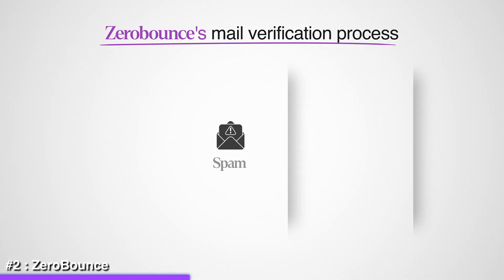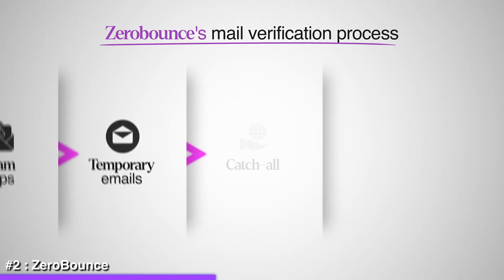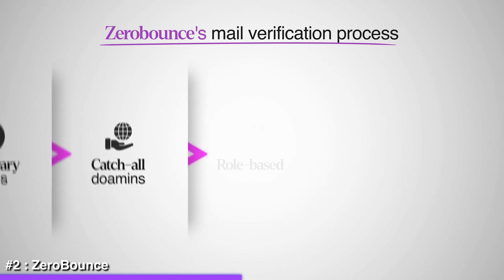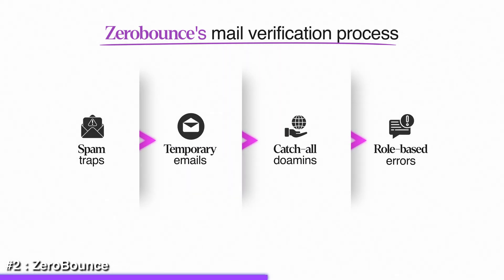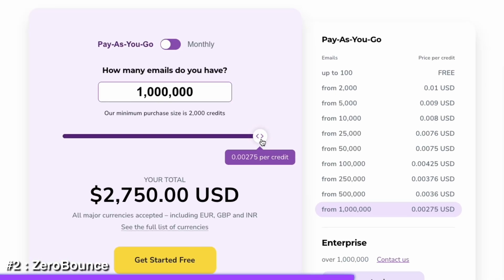ZeroBounce checks for over 30 different types of emails, like spam traps, temporary emails, catch-all domains, and even small mistakes like role-based errors in the email address that you might not even notice. Such an advanced and detailed verification process makes sure that your emails land in real inboxes.